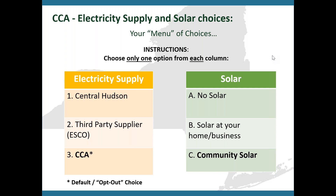One important distinction: the electricity supply program is designed as an opt-out program. The state has decided the utility is the default, and with CCA the municipalities are able to choose another favorable default. With community solar, people have to opt in and sign their own contract — they have to make the choice to install solar on their home or business or sign up for a solar farm.